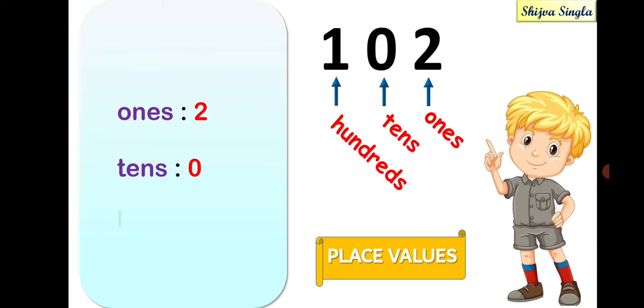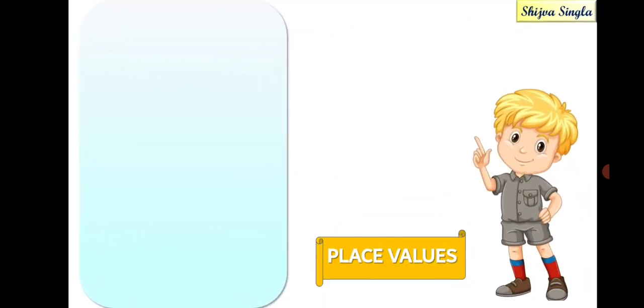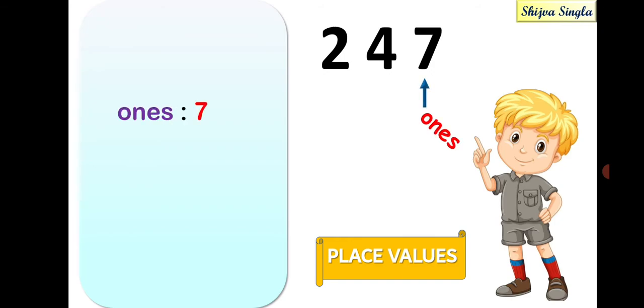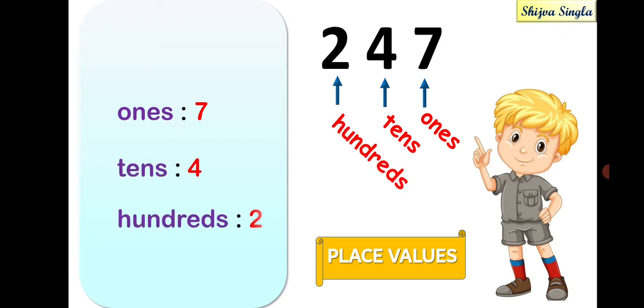Similarly, which digit is at the hundreds place? It is 1. Likewise, this is another example. So, 7 is at the ones place, 4 is at the tens place, and 2 is at the hundreds place. Alright.